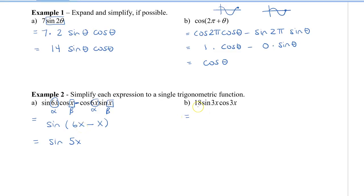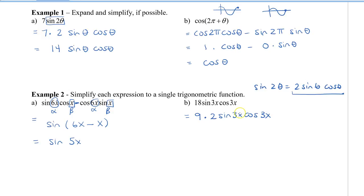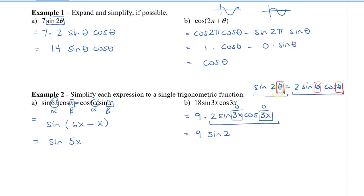Lastly, 18 sin 3x cos 3x looks like the double-angle identity for sine: sin 2θ = 2 sin θ cos θ. We factor 18 as 9 times 2, giving 9 · [2 sin 3x cos 3x]. Here, 3x represents our θ, so 2 sin 3x cos 3x = sin 2(3x) = sin 6x. The result is 9 sin 6x.